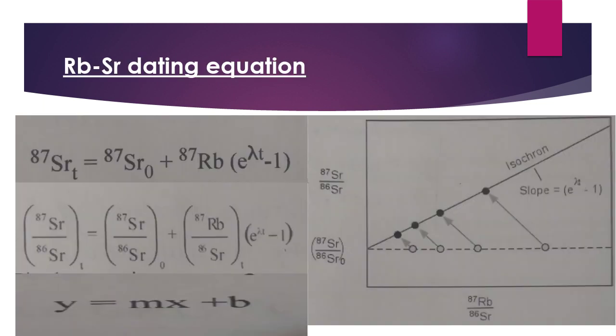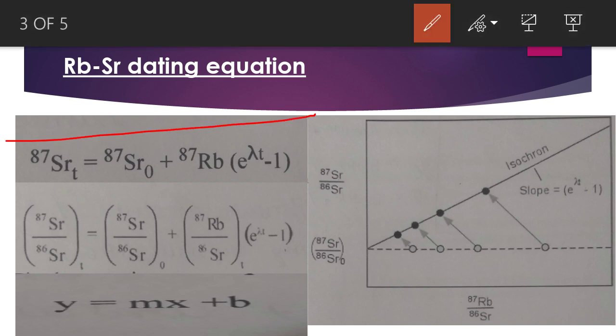This is the dating equation for any dating technique, in which we have the daughter element, number of daughter elements initially at time zero, and number of parent elements at current time.